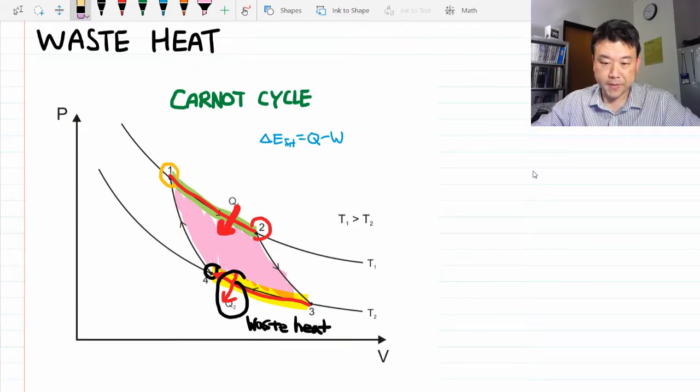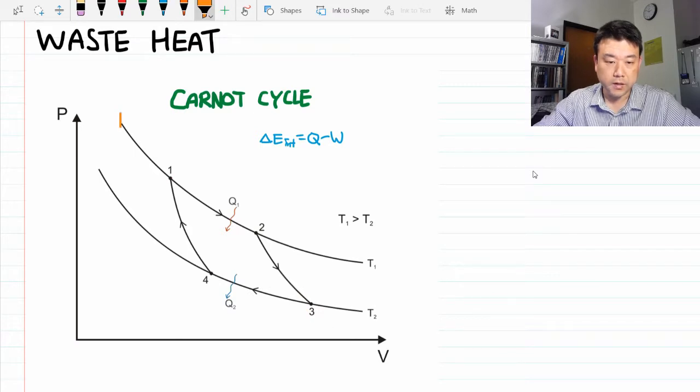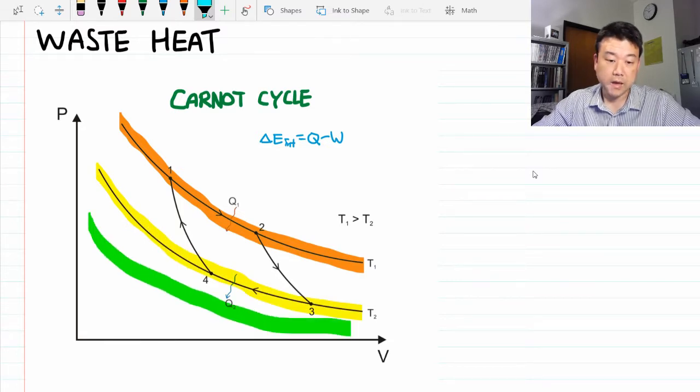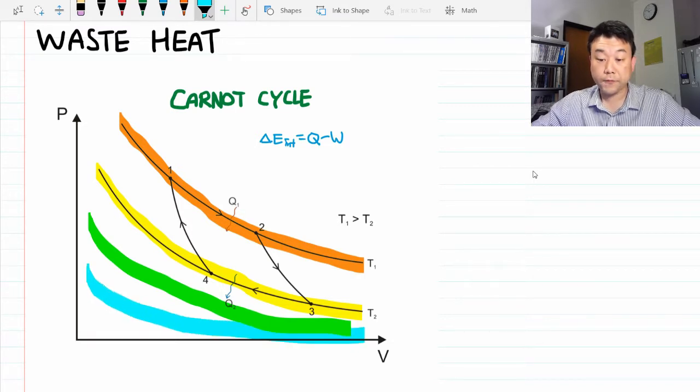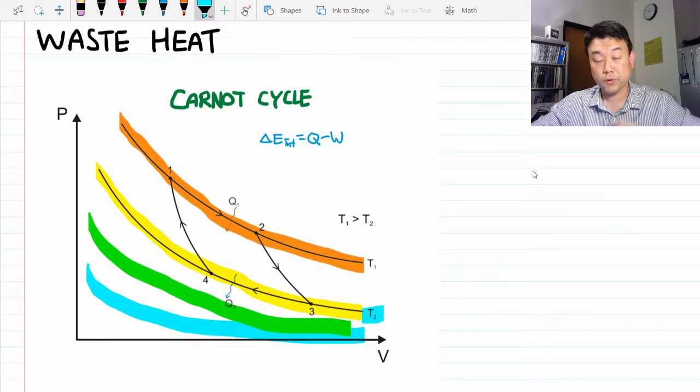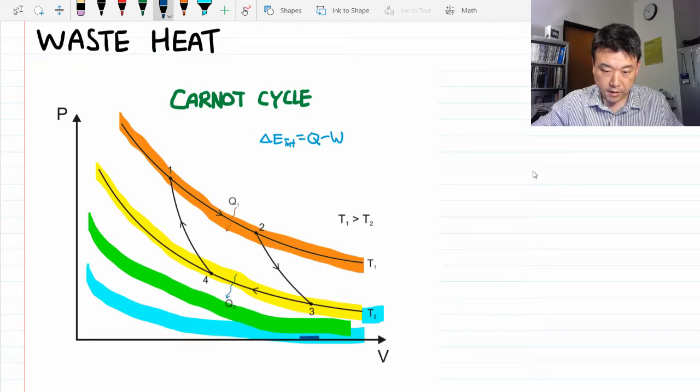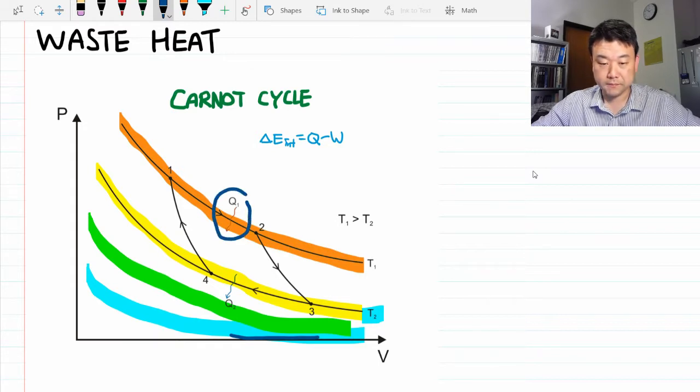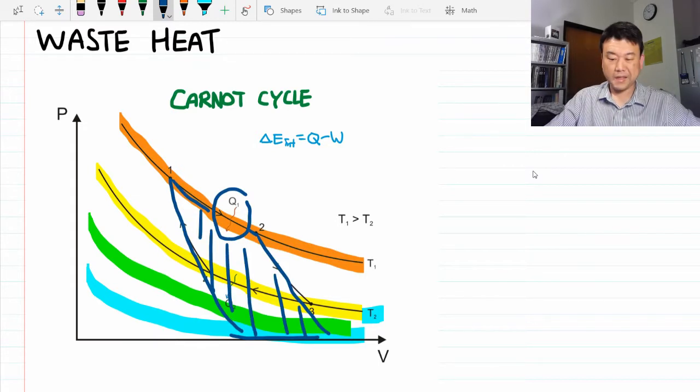If you spend enough time looking at these isotherms, you come to this conclusion that these isotherms go lower and lower as you go to lower and lower temperature. So if your T2 was zero, zero Kelvin, then the area under the curve will be zero. And you'll have turned all of the input heat into work.